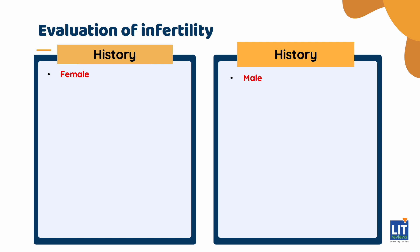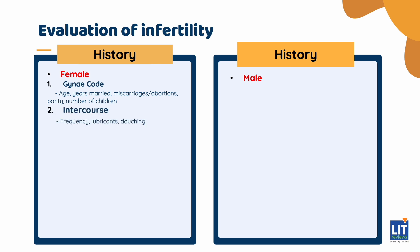For the female, pay specific attention to the OB-GYN history. Starting with the gynae code, ask about their age, number of years married, any miscarriages or abortions, and their parity. For sexual history, ask how frequently they are having intercourse, any lubricants or douching, coital difficulties such as erectile dysfunction or ejaculatory problems, and how long they have been trying to conceive to establish the diagnosis.